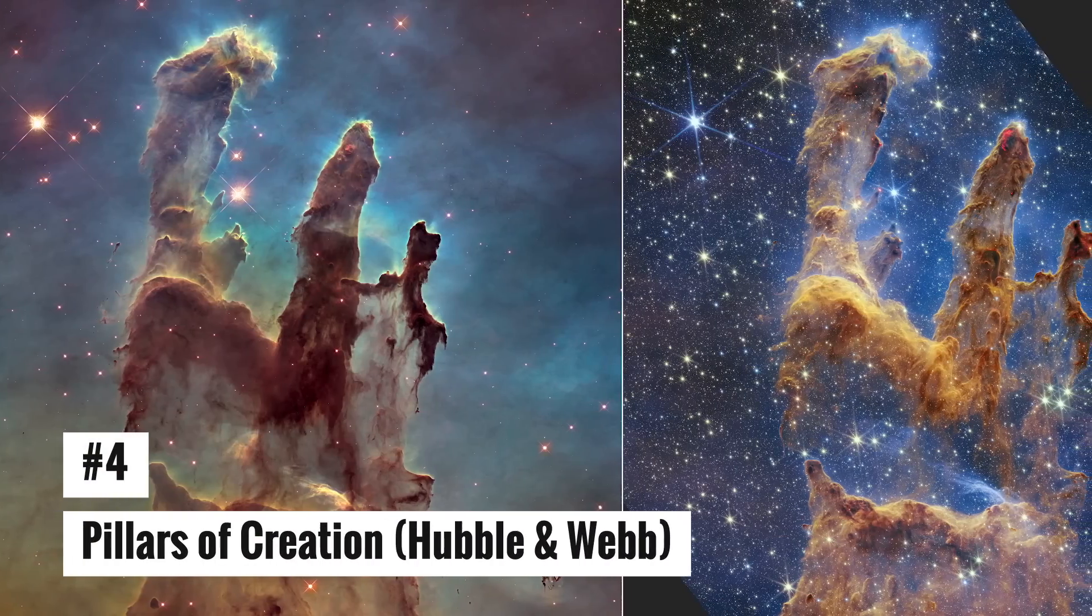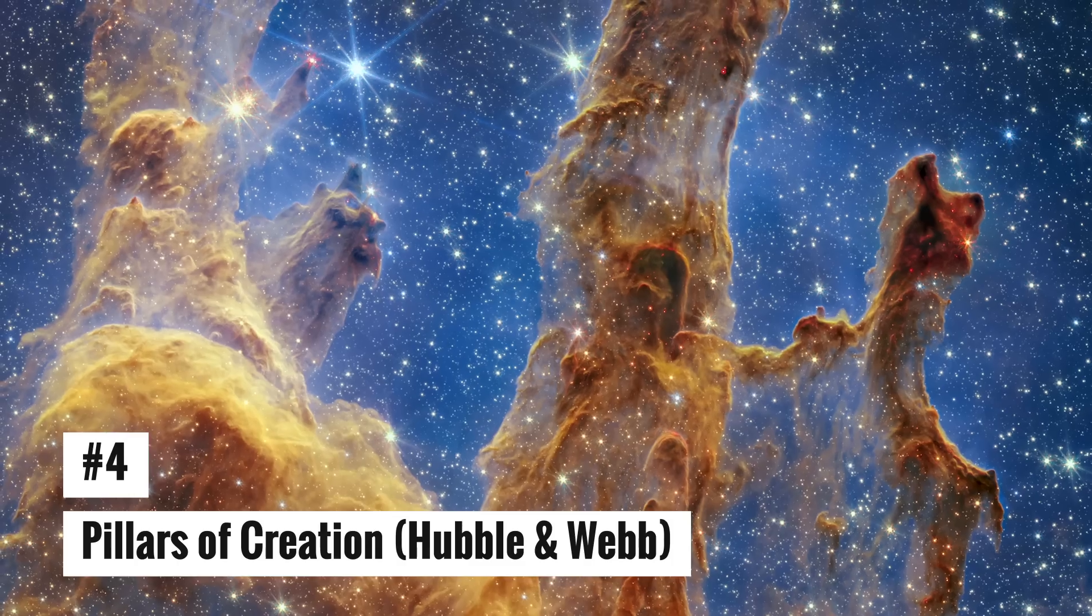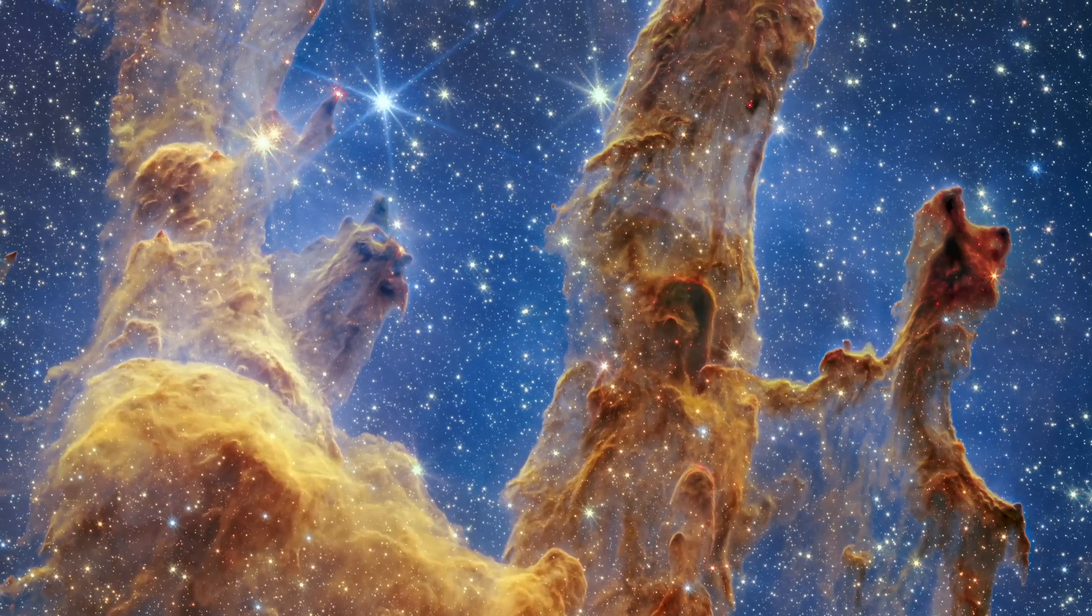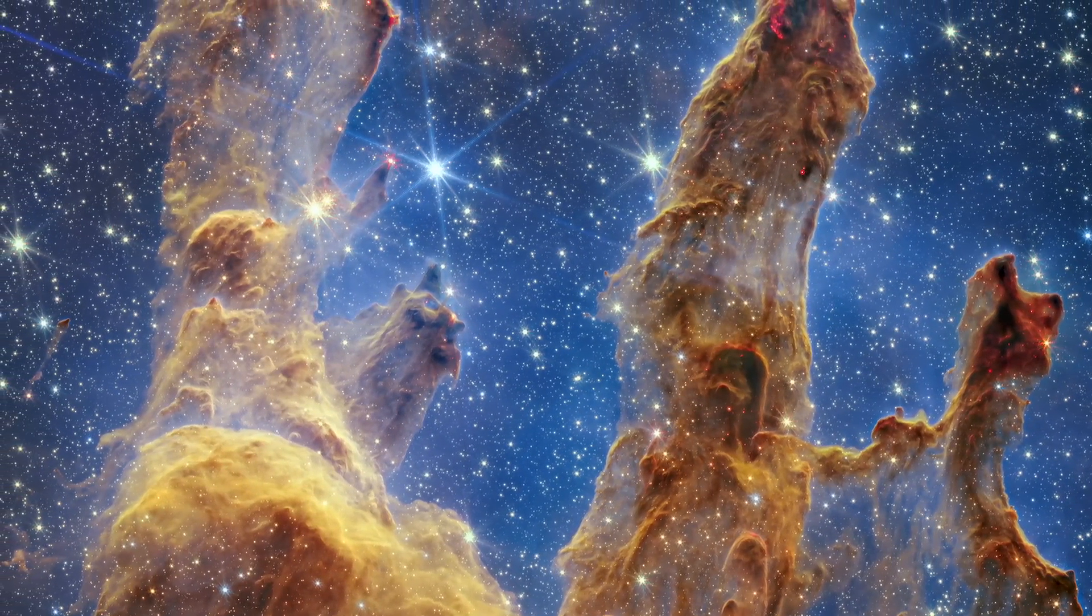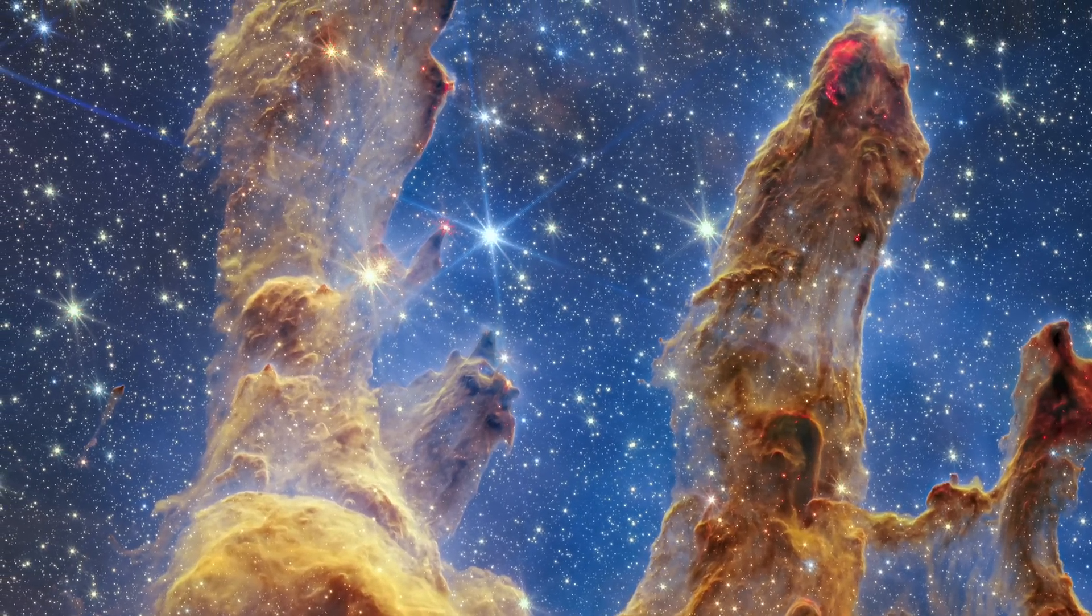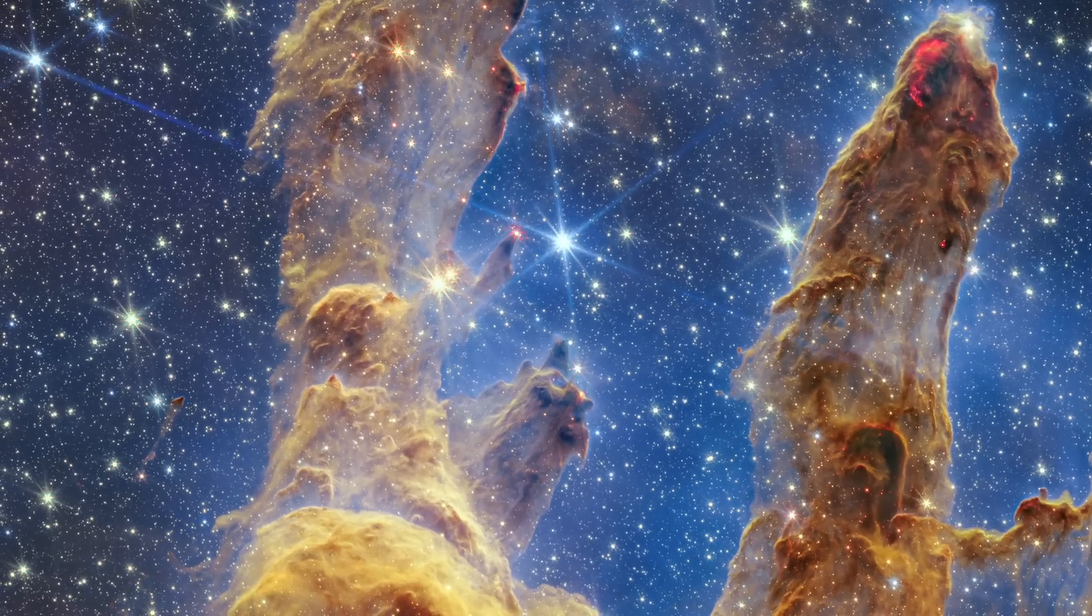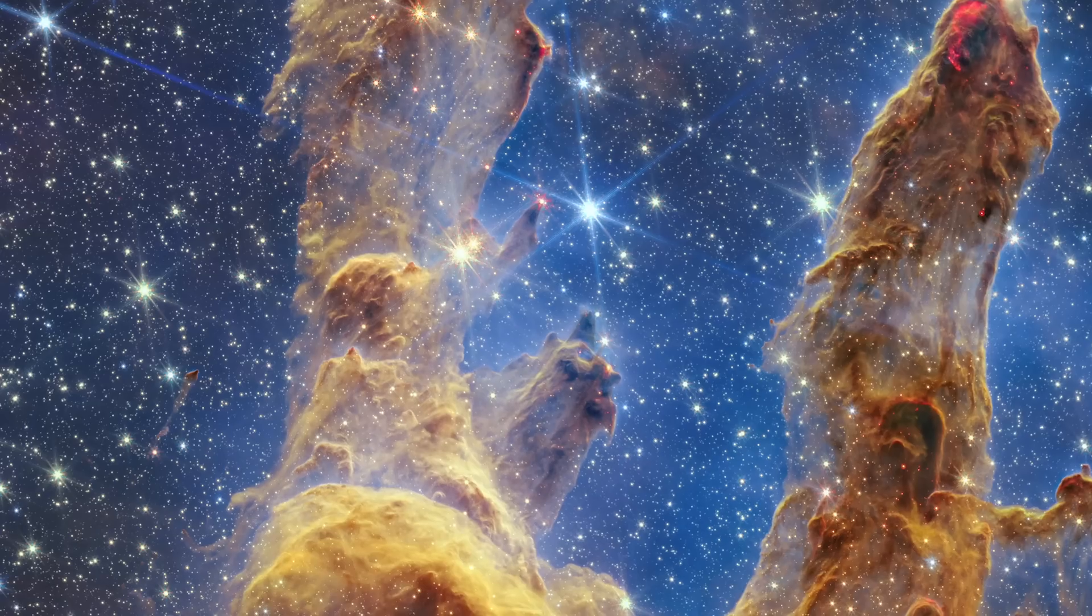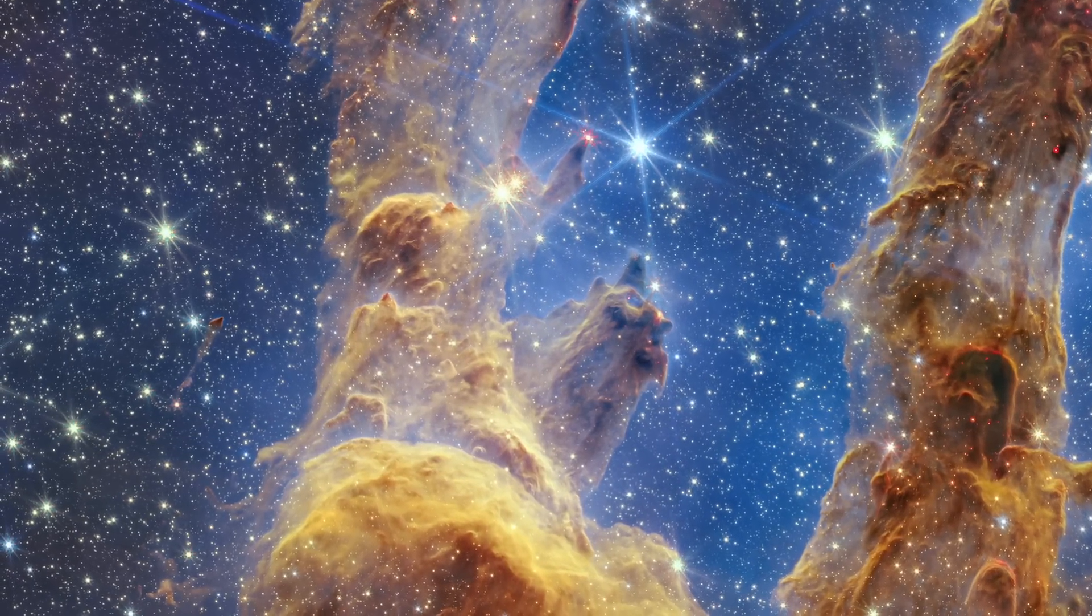Number 4: Pillars of Creation, Hubble and Webb. The Pillars of Creation were photographed by NASA's Hubble Telescope in 2014. NASA's James Webb Space Telescope's near-infrared vision shows more dust in this star-forming zone. The thick, dusty brown pillars are less opaque, revealing other red stars still emerging. Webb observes gas and dust pillars more clearly than Hubble.